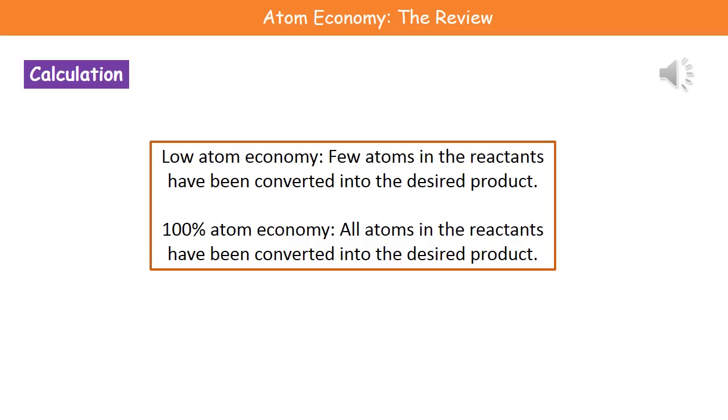What does that percentage actually mean? If we end up with a low percentage, closer to zero, we've got a low atom economy—only a very small number of atoms from our reactants are being converted into the product we want, so there's a lot of waste. However, if we've got 100% atom economy, every atom in our reactants has been converted into the product we want. That's a very good process. The example you've already looked at is the Haber process, which makes ammonia from nitrogen and hydrogen and has an atom economy of 100%.